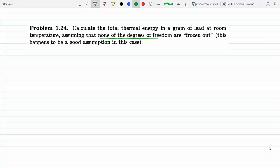None of the degrees of freedom are frozen out because as you go up in temperature you can freeze some of these, actually as you go down in temperature you could freeze some of these degrees of freedom. So here none of them is frozen out, so f is six and U_thermal is one half f kt.